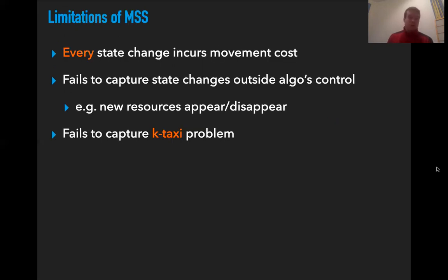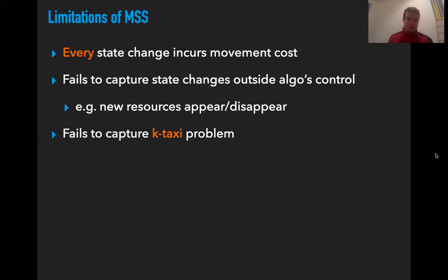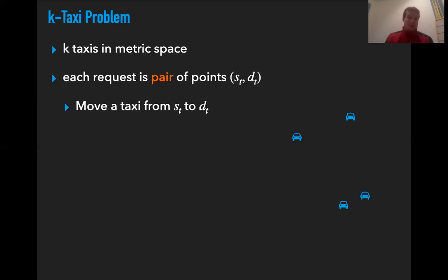Even though many problems fall into the MSS class, there are still limitations to Metrical Service Systems. One is that it's impossible to change the state of the algorithm without incurring cost. Therefore, Metrical Service Systems fail to capture more dynamic environments where the state of the algorithm changes for reasons outside the algorithm's control — for instance, resources could appear and disappear and we might not want to charge any cost for this. Also, Metrical Service Systems don't capture the k-taxi problem.